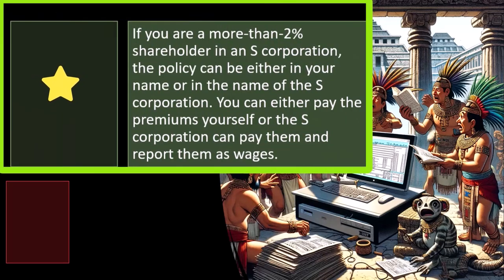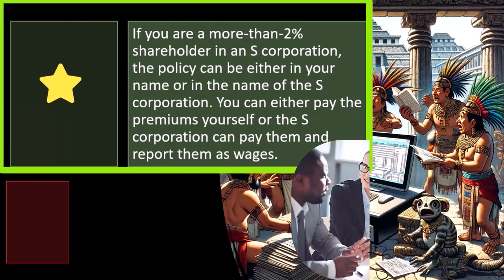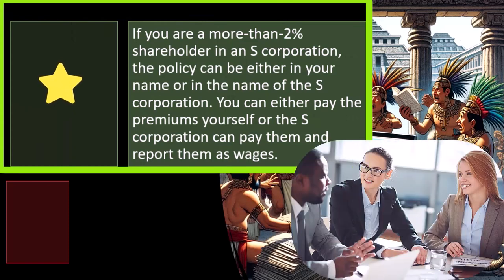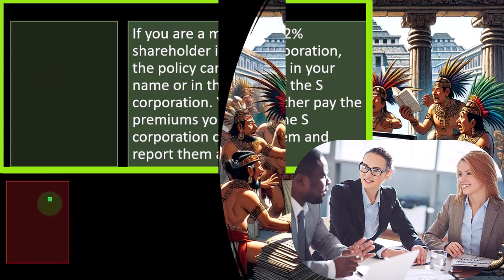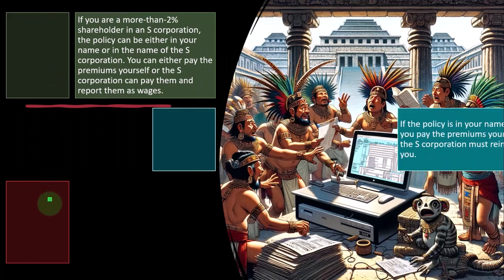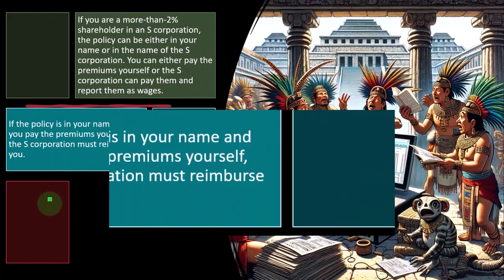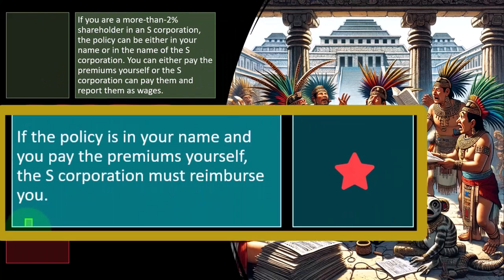If you are a more than two percent shareholder in an S corporation, the policy can be in your name or in the name of the S corporation. You can either pay the premiums yourself or the S corporation can pay them and report them as wages.